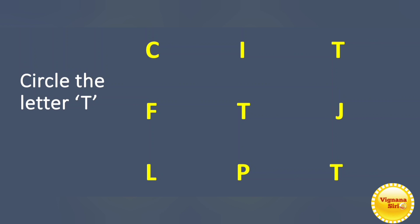Now we'll see some activities. Circle the capital letter T. What is the first letter? That's the capital letter C, right? What is the next one? I. That is the capital letter T. So circle. F. The next one T again. Circle. What is the next one? J. L. P. And again T. Got it?